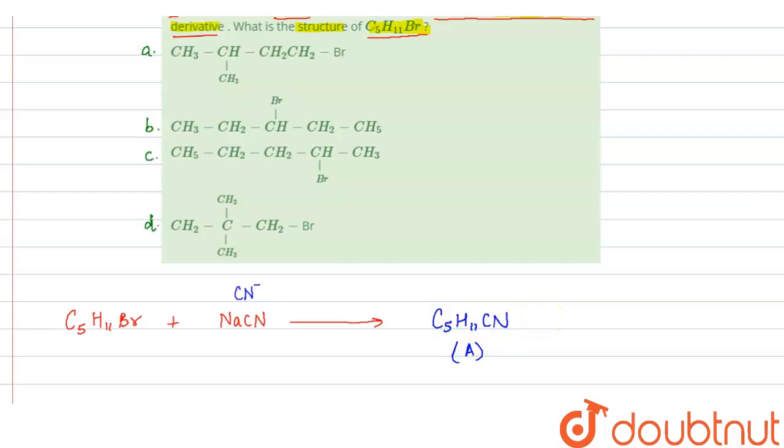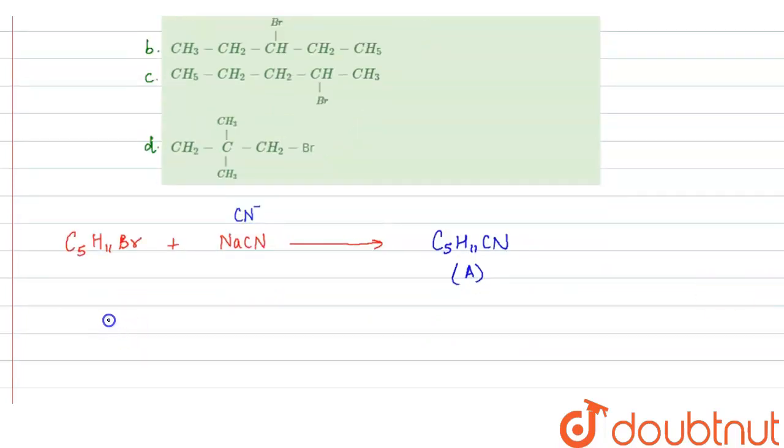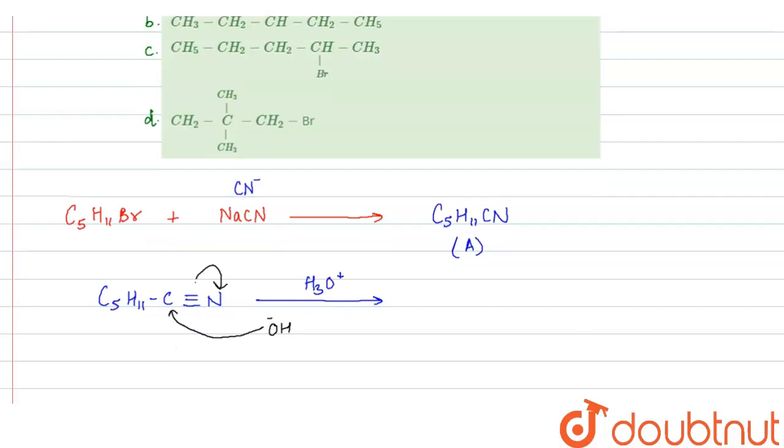Then, hydrolysis of A is done. So, we can write down C5H11C triple bond N. We can write like this. Now, when its hydrolysis will be done, now there will be OH negative ion in H3O positive. So, this OH negative ion will attack this carbon and this bond will break like this. So, here we get C5H11C. Here we get OH and here we get double bond N negative.